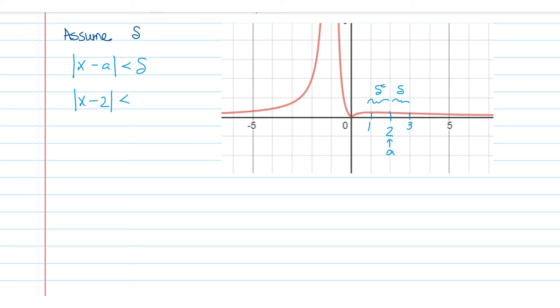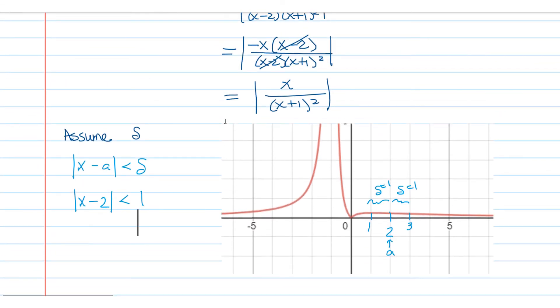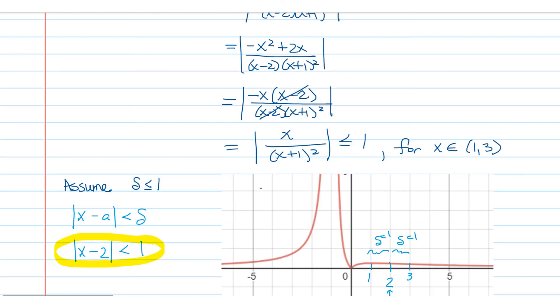In this case we're talking about |x-2| being less than a particular value. Well if I let δ = 1, so I'm only one unit away on either side from 2, then that guarantees that my x values are between 1 and 3 and I won't have the problem of having an unbounded expression. I can say that |x/(x+1)²| has a larger denominator than numerator and is less than or equal to 1 for all x in the interval from 1 to 3.